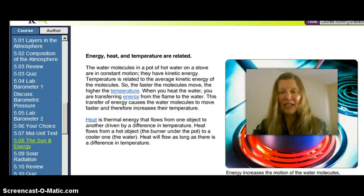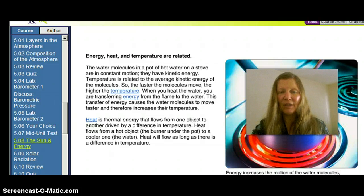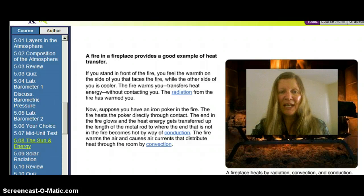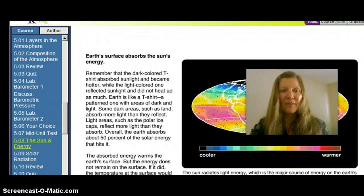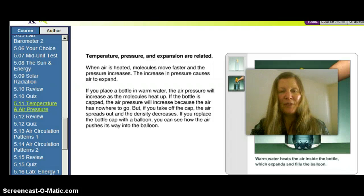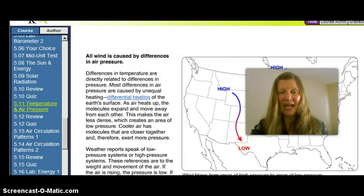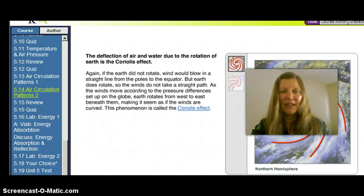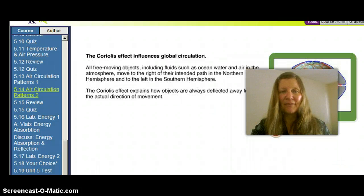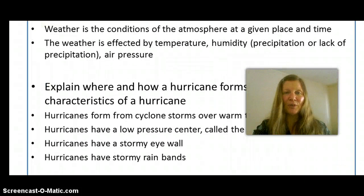Define radiation, convection, and conduction — heat is thermal energy that flows from one object to another. Review radiation from an event like a fire, conduction, and convection. Be able to predict where the Sun's energy will hit the Earth with the most direct sunlight. Review temperature and pressure and how they're interconnected. Understand how barometers are used to measure atmospheric pressure, how differential heating creates local and global winds, the Coriolis effect, and how that influences global circulation.